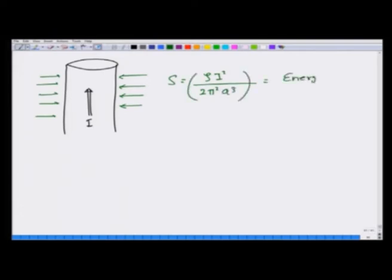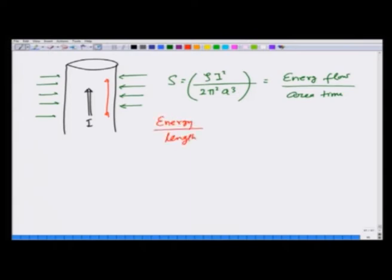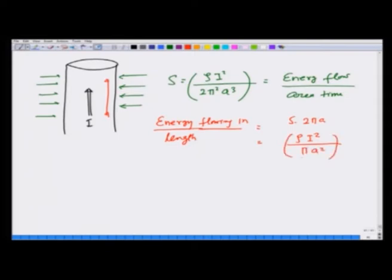Keep in mind that S is energy flow per unit area per unit time. If I take a unit length of this wire and compute how much energy is flowing in, the energy flowing in per unit length is S × 2πa × 1 = ρi²/(2π²a³) × 2πa, which simplifies to ρi²/(πa²). This is resistance R = ρ/(πa²) times i², per unit length — the energy flowing in.